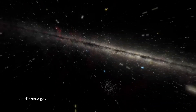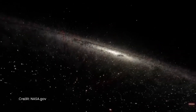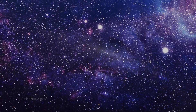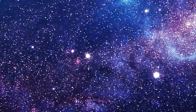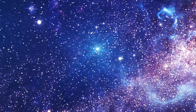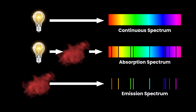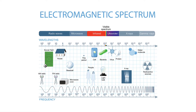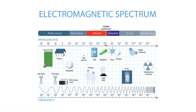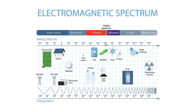Nearly everything we know about the universe comes from studying light produced by distant objects such as stars. From light, astronomers have learned that stars and galaxies are made from the same elements found here on Earth, and that all elements and atoms obey the same physical laws. The most common way to study stars is to look at the patterns of light they emit. These patterns of light are known as spectra. Light is made up of waves of electromagnetic radiation. The length of these waves, or wavelengths, determines the type or color of light a star produces.